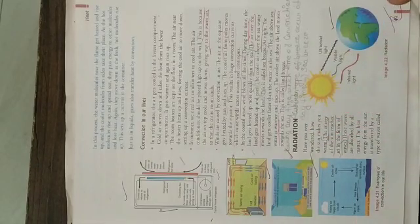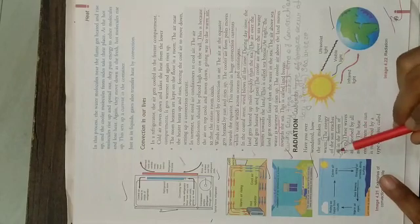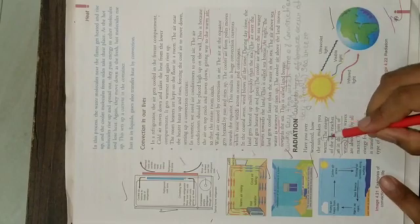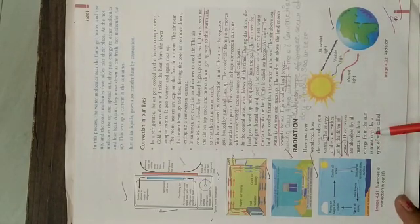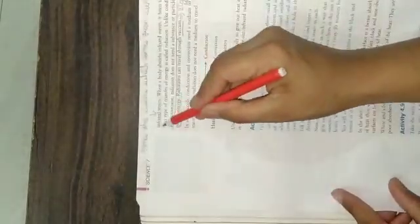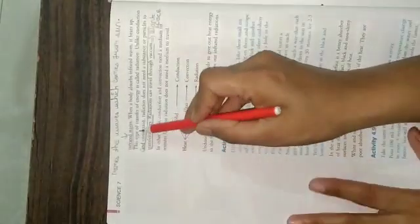Radiation generally occurs in gases or through solar energy. Have you ever wondered how the sun makes you warm? The energy of the sun reaches us in the form of waves — specifically, infrared waves. These waves are absorbed by all matter.